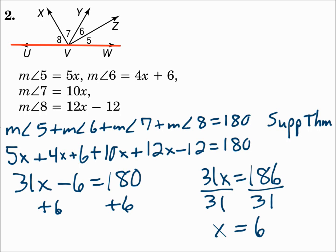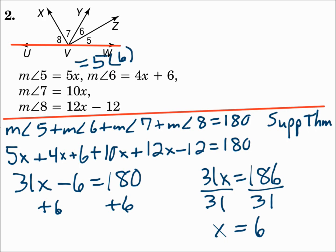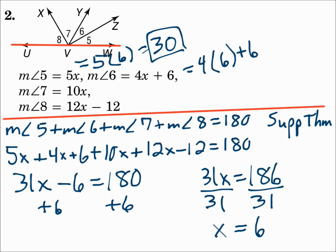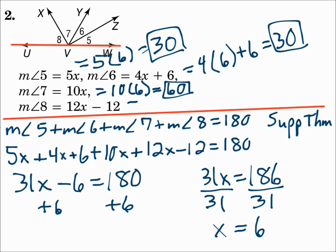Finish the question by substituting 6 in for x in each angle measure. For angle 5: 5 × 6 = 30 degrees. For angle 6: 24 + 6 = 30 degrees. For angle 7: 60 degrees. And for angle 8: 12 × 6 − 12 = 60 degrees. All those angles together made a straight line, so their measures add up to 180. Solve for x, then remember to substitute that value into each angle measure.